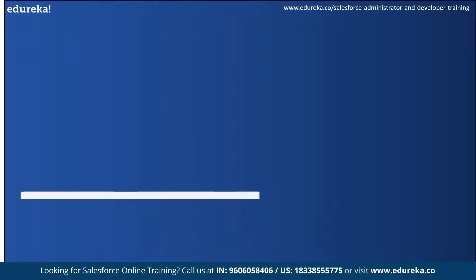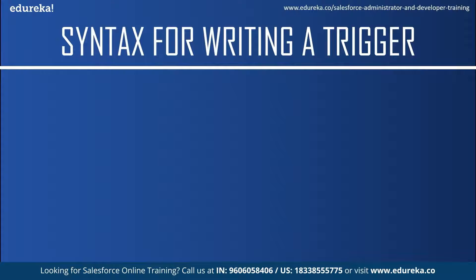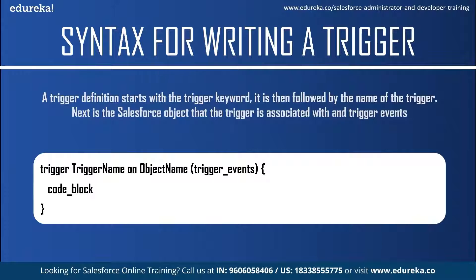The syntax of a trigger definition is quite different from a class definition syntax. A trigger definition starts with the trigger keyword, followed by the name of the trigger. Next is the Salesforce object the trigger is associated with — this is known as an S object and could be leads, contacts, accounts, or any custom object. Then comes the trigger event, which can be one or more comma-separated events. Finally, there is the body of the code containing the condition under which it fires.